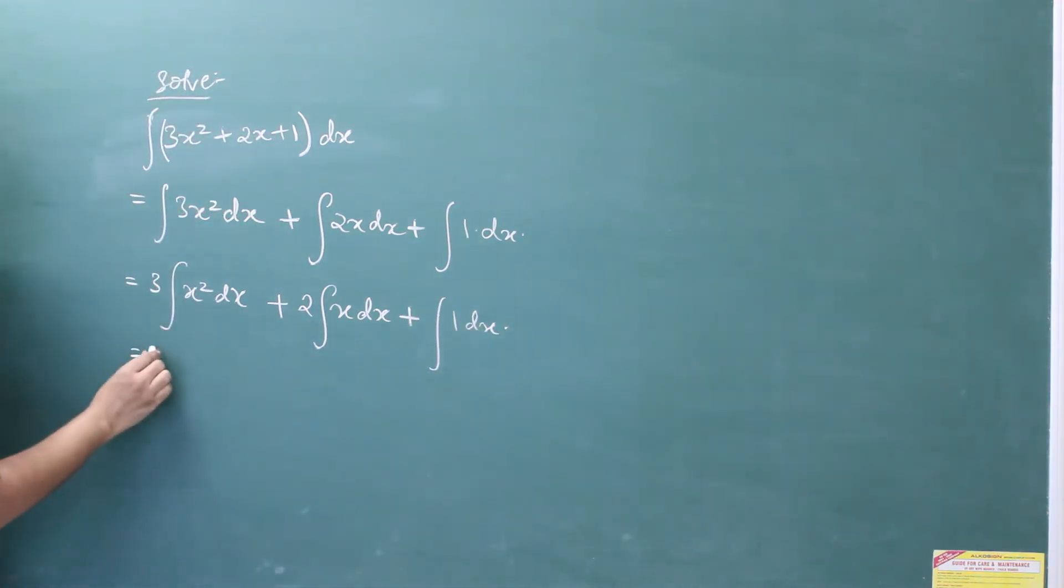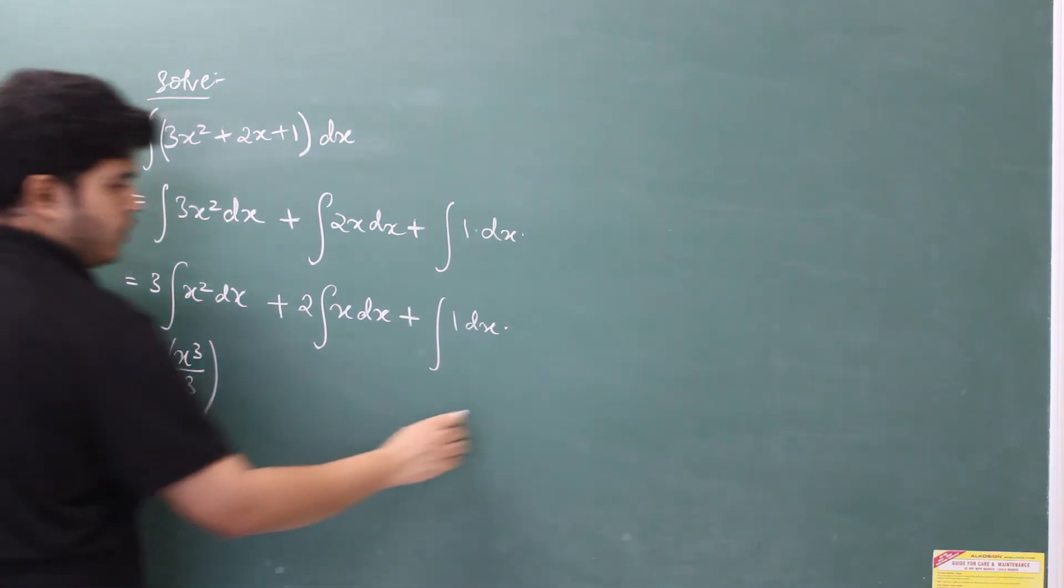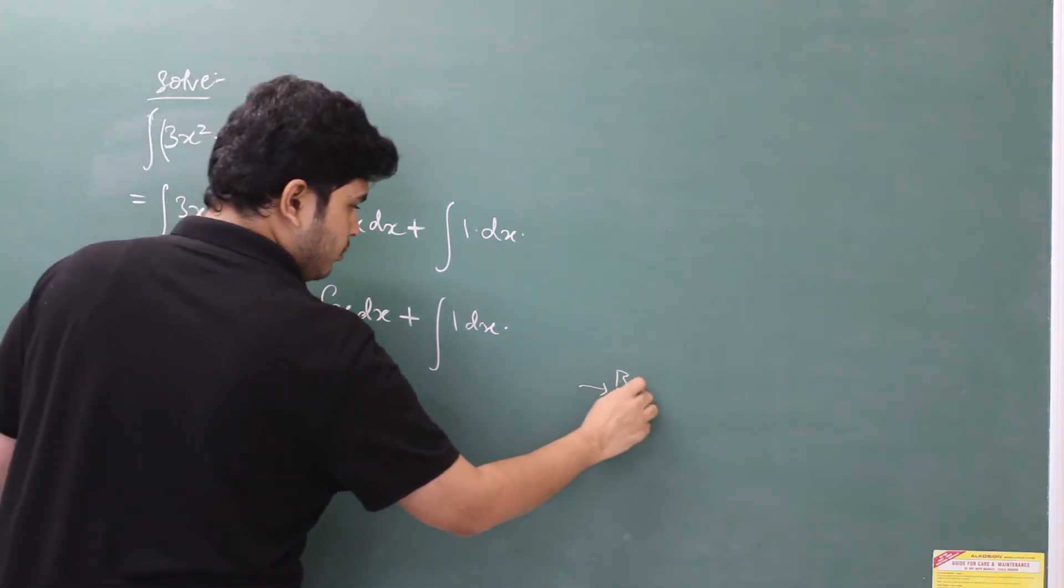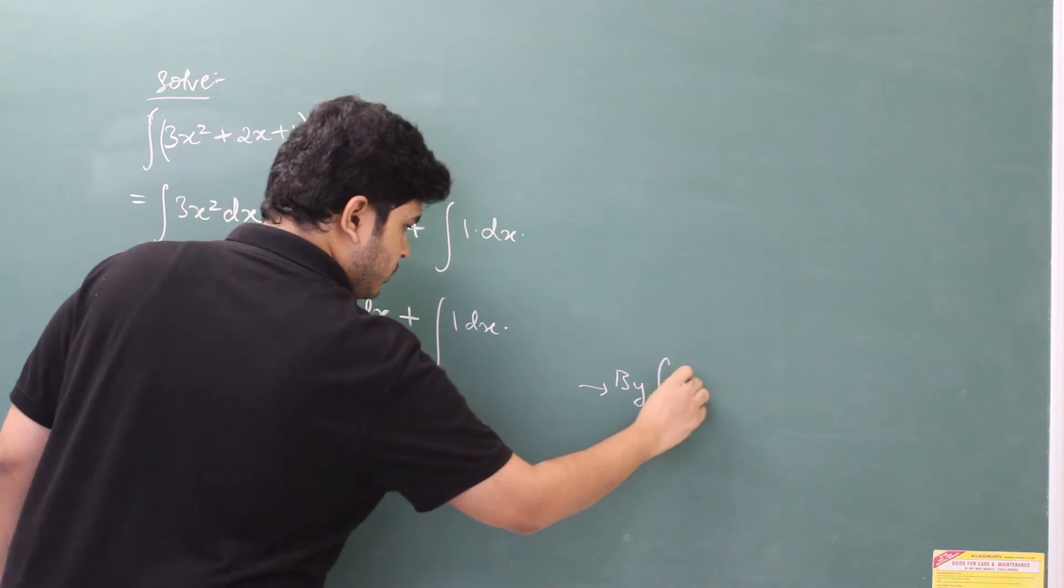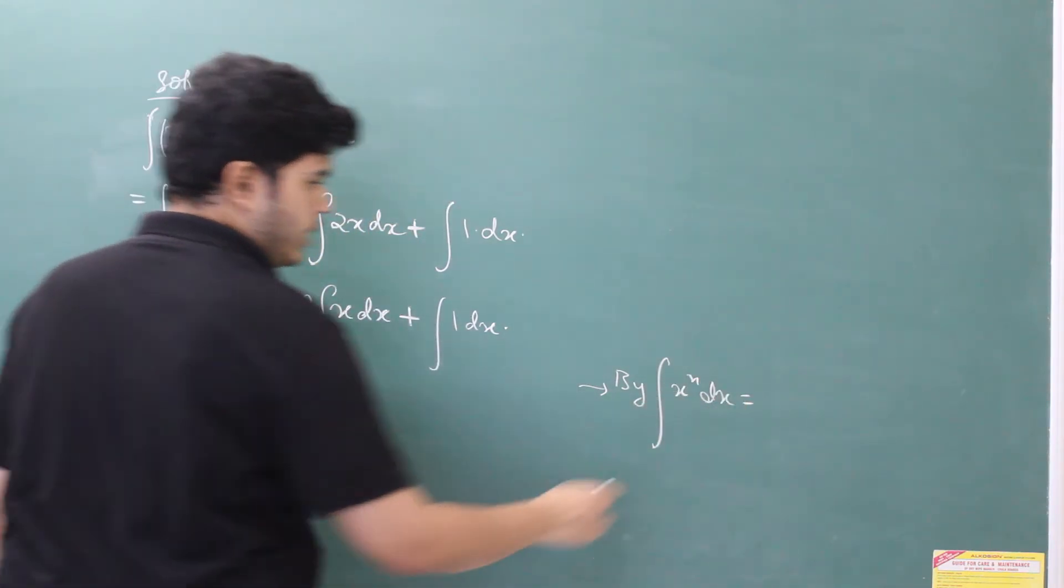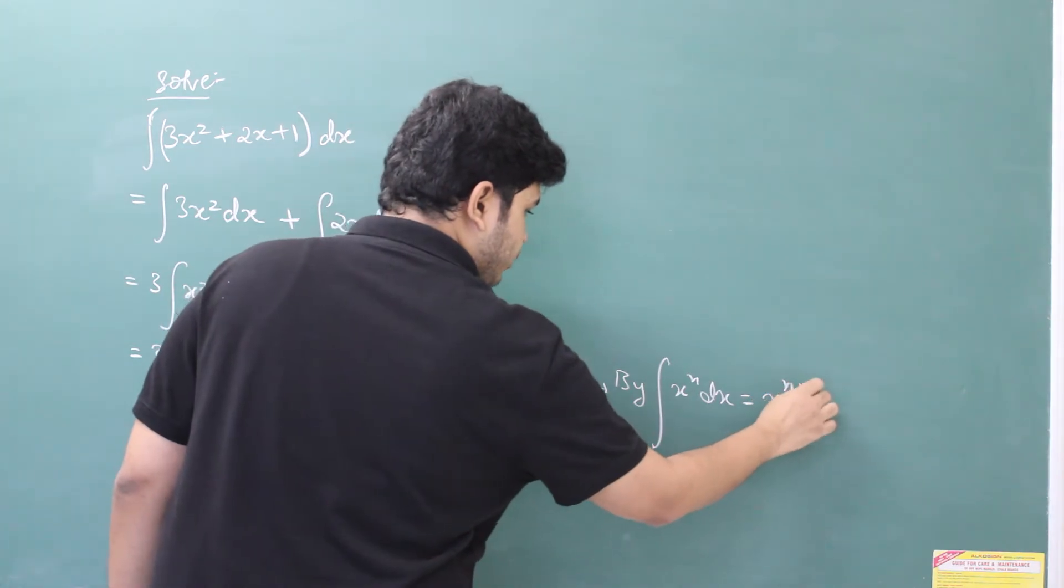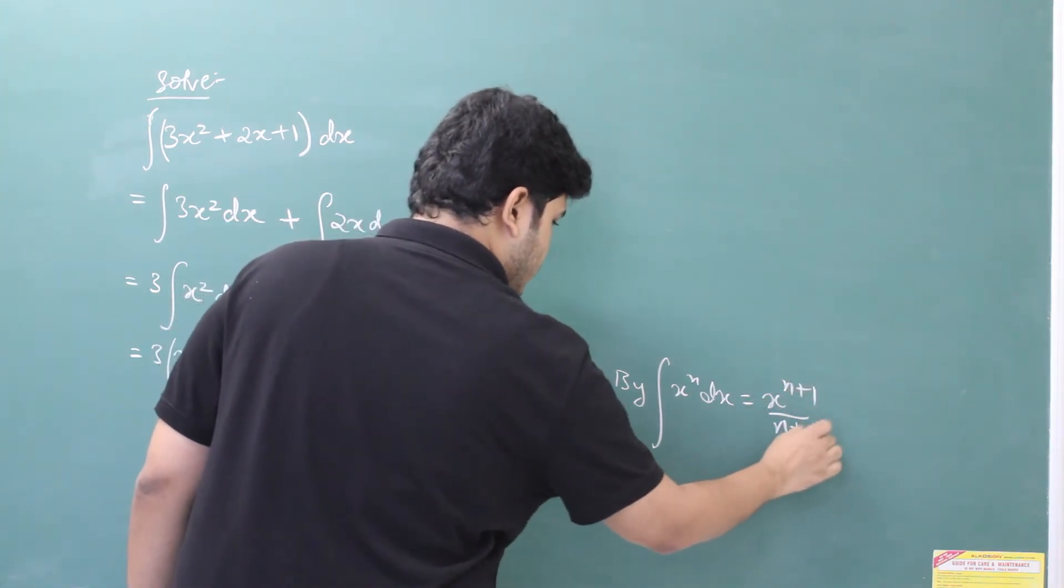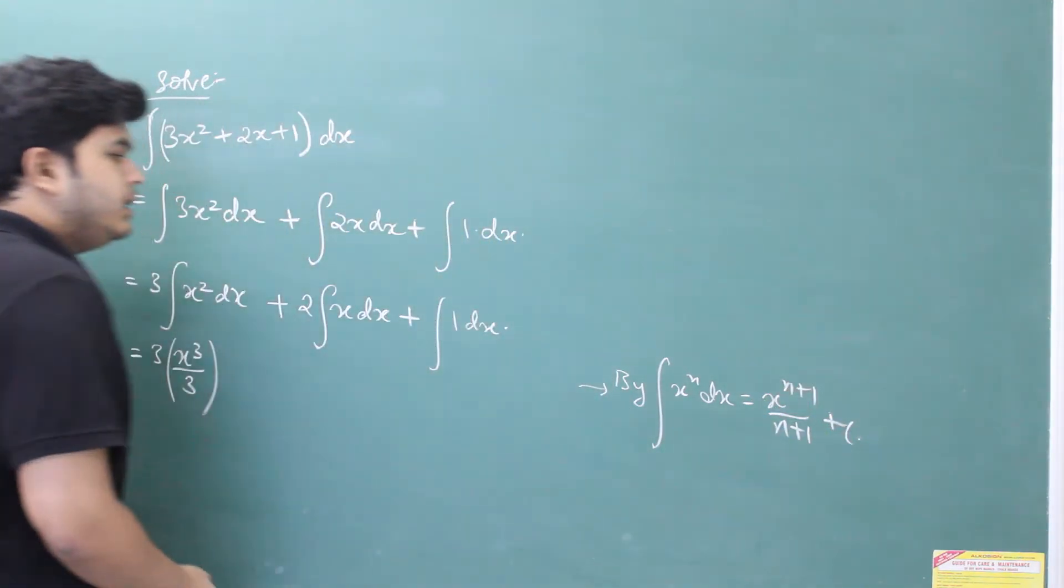Now keep 3 as it is. What will happen to x squared dx integral? We'll add 1 to the power that becomes x cubed divided by 3. So this is by formula x to the power n dx is equal to x to the power n plus 1 upon n plus 1 plus c. We'll put plus c at the end.